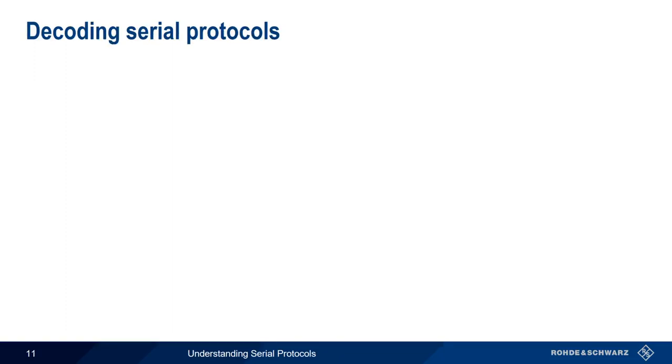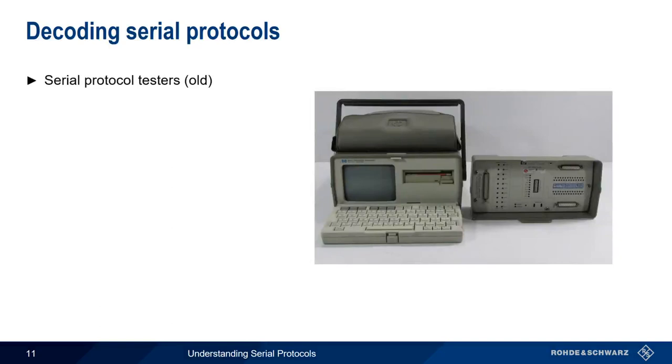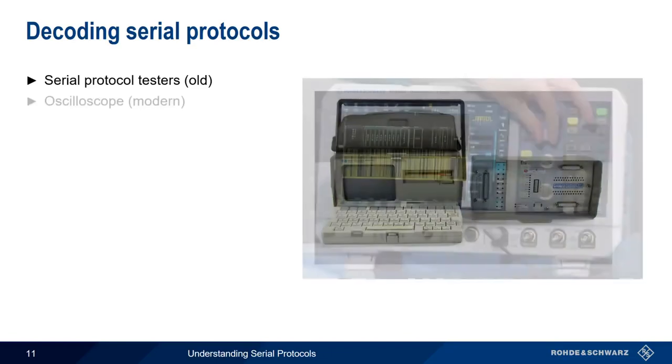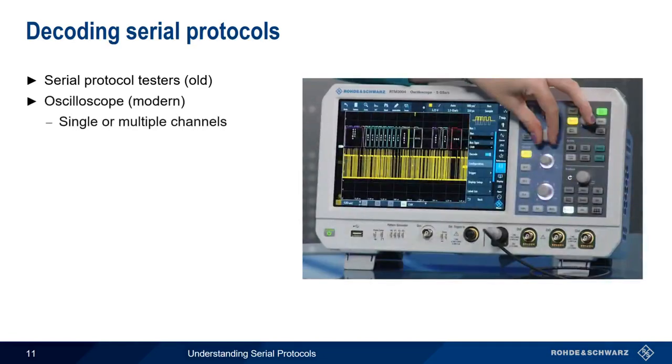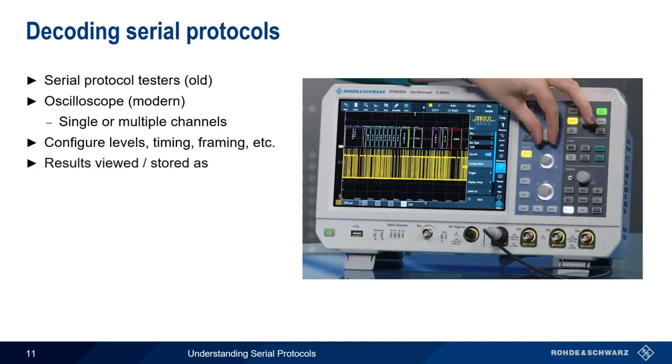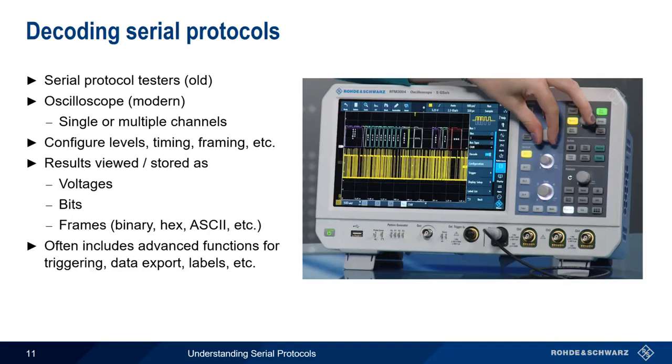So how do we decode serial protocols? In the old days, serial protocols were typically decoded using special dedicated protocol testers. But today the most common method by far is using a modern digital storage oscilloscope with one or more channels. After choosing the serial protocol of interest, we need to configure the levels, timing, and framing to match the serial signal that we're analyzing. Using this information, the oscilloscope produces results in the form of raw voltage levels, detected bits, and frames whose contents can be displayed in binary, hex, ASCII, et cetera. Serial decode on oscilloscope also often includes additional functionality, such as triggering on specific symbols within the frame, assigning humanly readable labels to user-defined patterns, exporting data, et cetera.